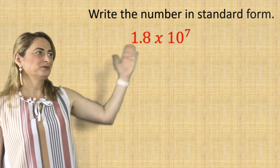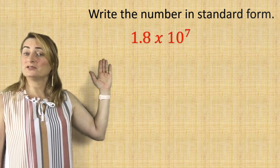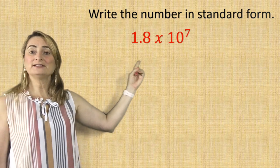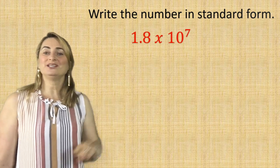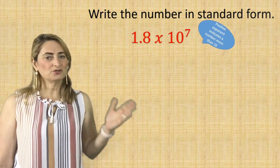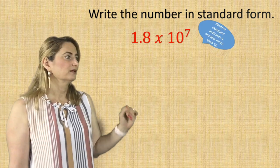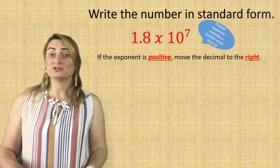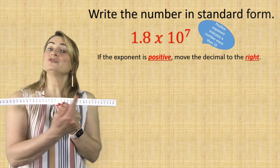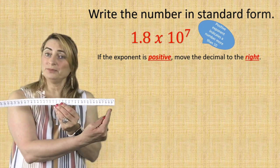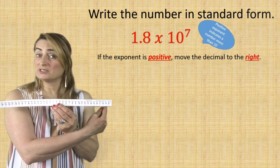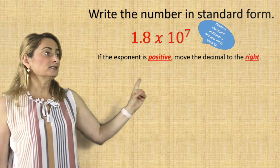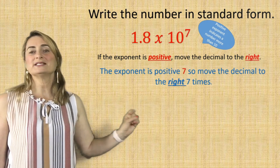Here's another example — write the number in standard form. It's written in scientific notation because it has a factor of 1.8 times a power of 10. But notice the exponent this time is a positive exponent, so this has to be a big number. If the exponent is positive, move the decimal to the right, because on the number line, moving to the right makes numbers bigger. The exponent is positive 7, so move the decimal to the right 7 times.